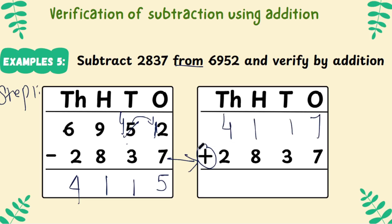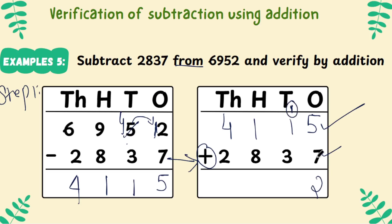Write 4,1,1,5 on the above. The second number is written as it is. For the above number, you write the answer of the subtraction. Now, do the addition: 5 plus 7 is 12, write 2 carry 1. 1 plus 1 is 2. 2 plus 3 is 5. 1 plus 8 is 9. 4 plus 2 is 6.